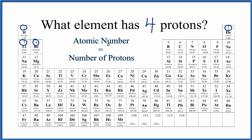Sometimes the atomic number is called the proton number. That's because, again, the atomic number equals the number of protons. And if you want to find out how many protons any element on the periodic table has, you just look at the atomic number.